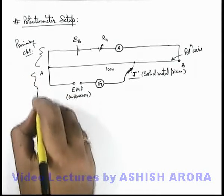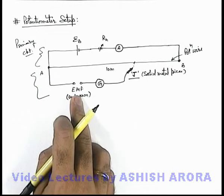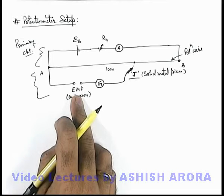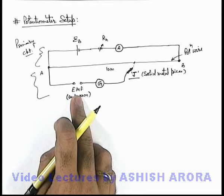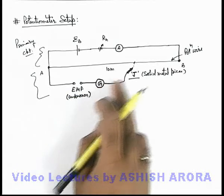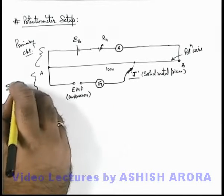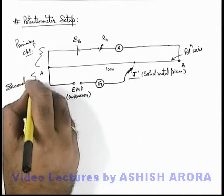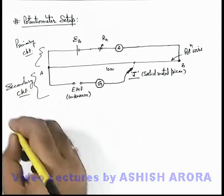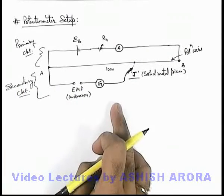this part of circuit in which there is an unknown EMF which is to be measured, or any unknown potential difference which is to be measured, connected in series with the galvanometer and terminated at a jockey - now this part of circuit we call the secondary circuit of the potentiometer wire. And this is the whole setup of potentiometer.